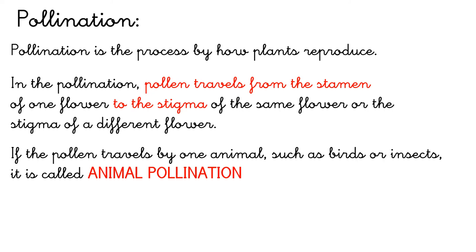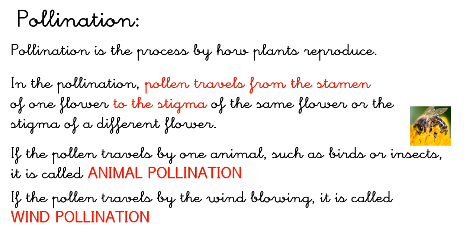If the pollen travels by an animal, such as birds or insects, it's called animal pollination. For example, when a bee goes to a flower, the pollen sticks to its body, and when the bee travels to another flower, it transports the pollen with it. If the pollen travels by the wind blowing, it's called wind pollination.